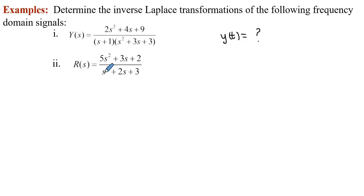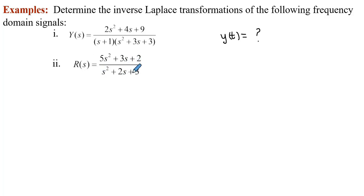We dealt with the first example and managed to find y of t. Now we're going to focus on the second example, where R(s) is equal to this rational expression. At this stage, we need to find the time domain signal r(t) — that's our unknown.